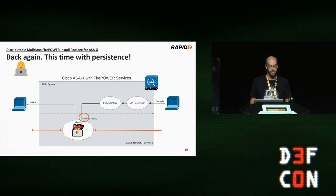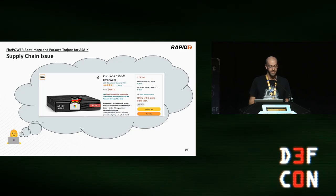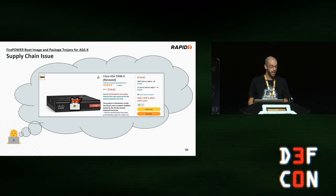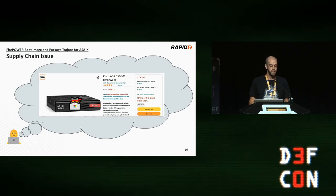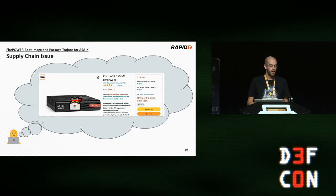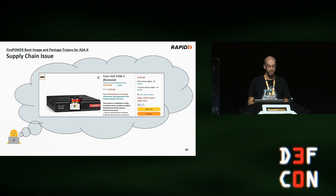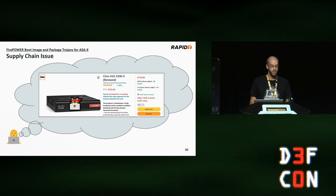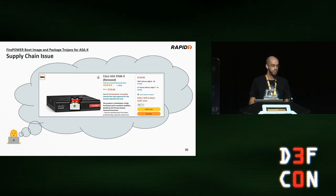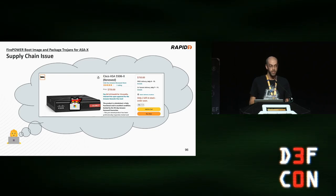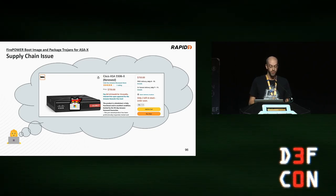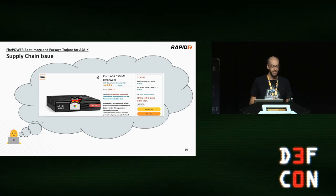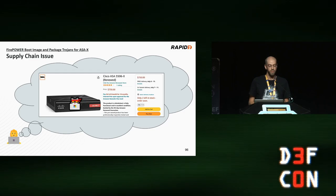I described this to Cisco as a potential supply chain attack, but they disagreed. They pointed out that the Firepower module has a root shell feature, so a vendor could simply insert arbitrary code using that root shell — no malicious installation package required. Which I agree is true, but to me that's a separate and also concerning supply chain attack. I wasn't able to win them over to my point of view.